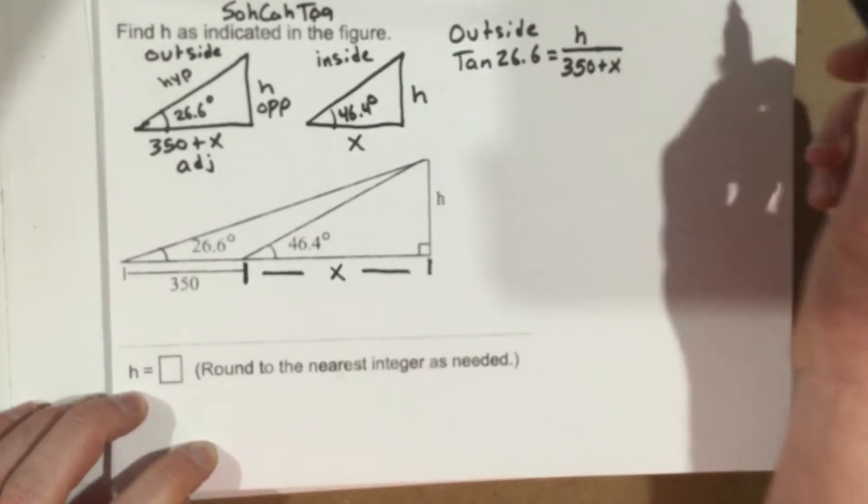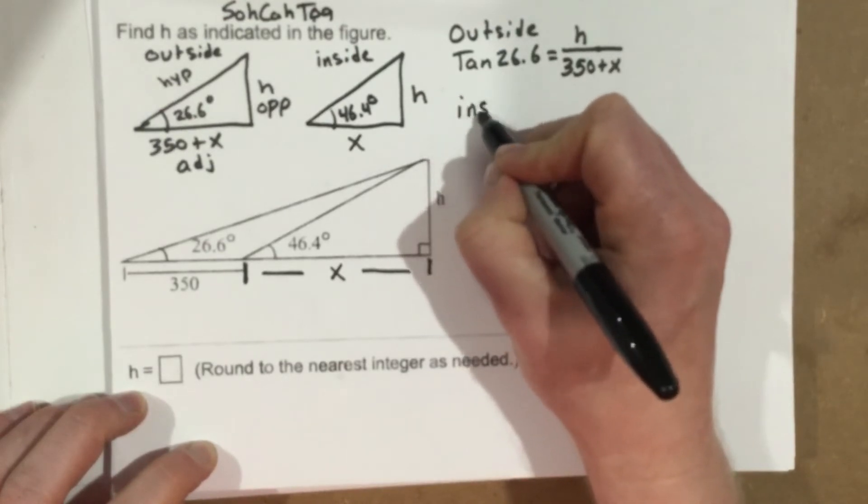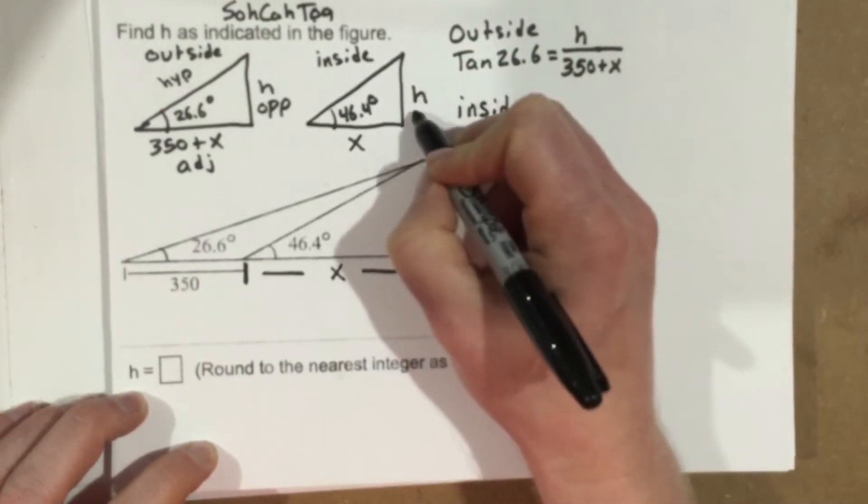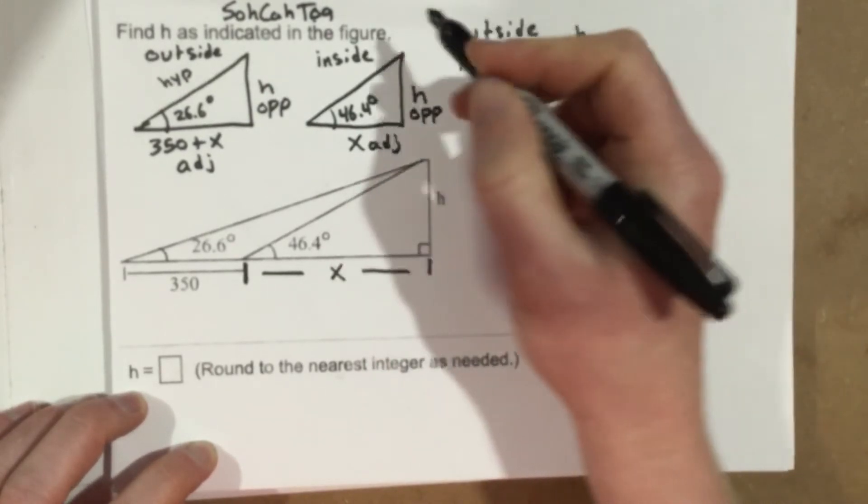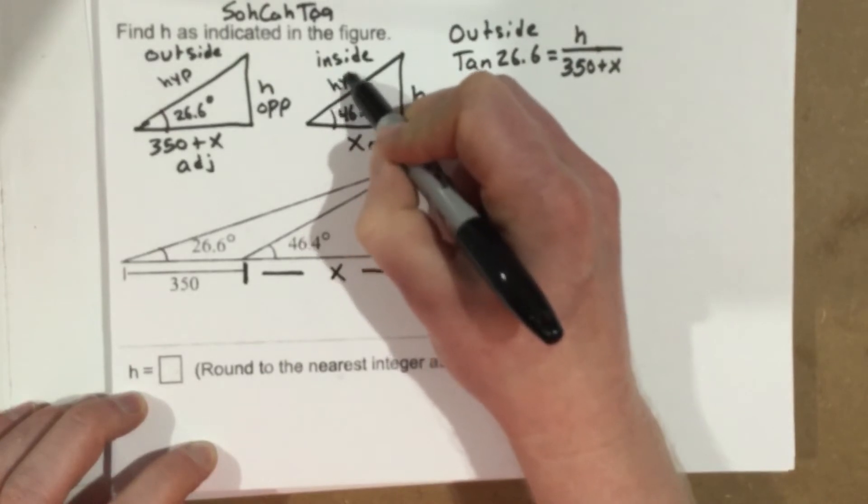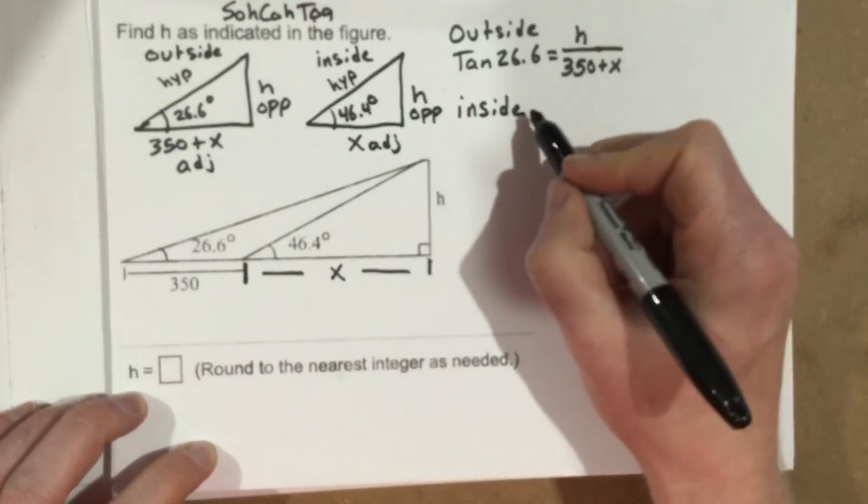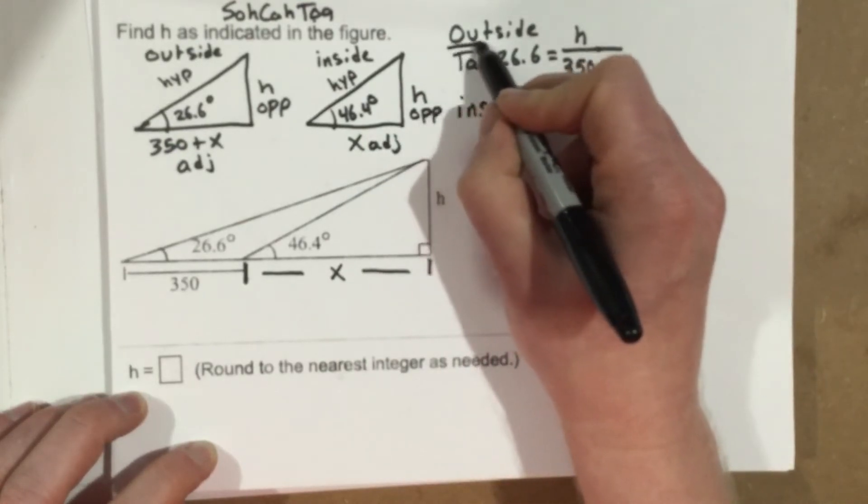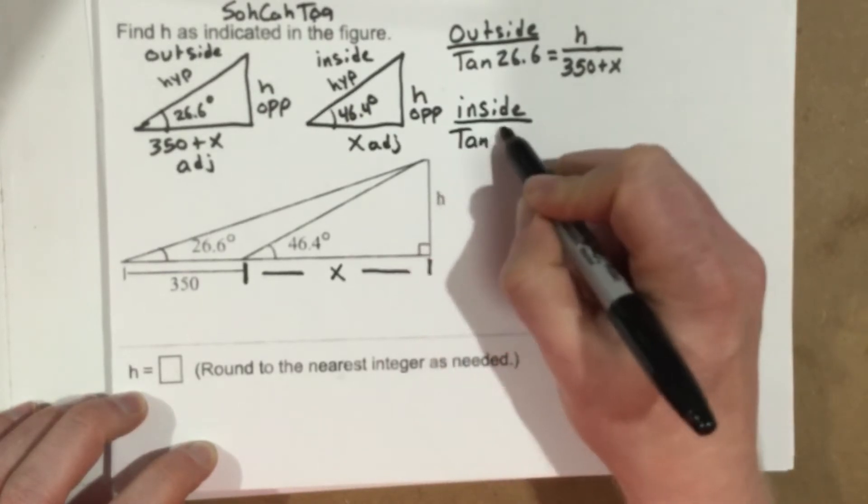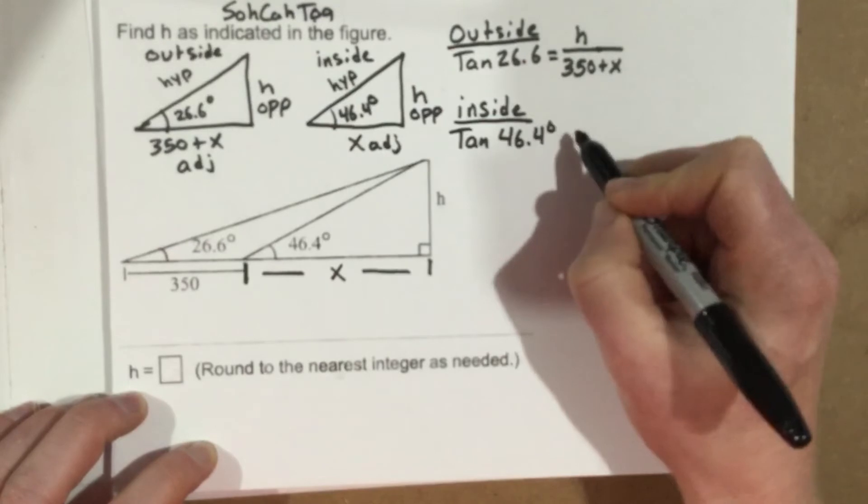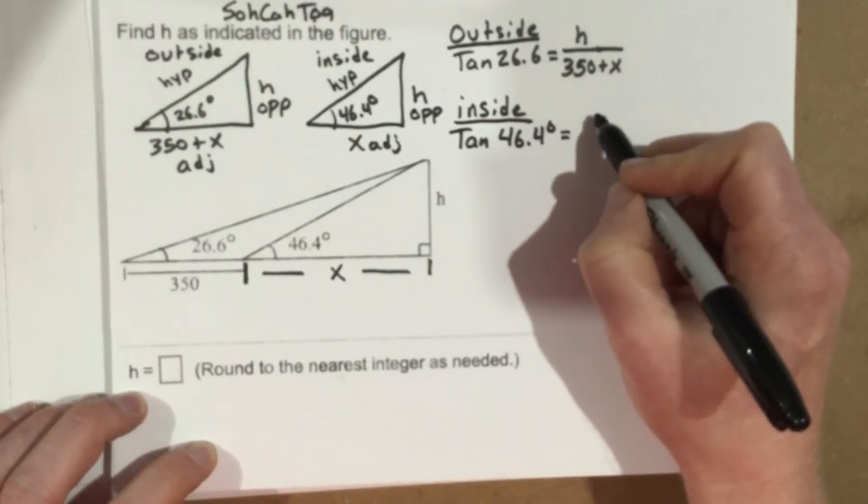Now I'm going to do the same thing with the inside function. I'm going to label that this is the opposite side of the angle, this is the adjacent side, and then this is the hypotenuse here. So the opposite side is h, the adjacent side is x. So for the inside function, I will get tan 46.4 degrees equals h over x.